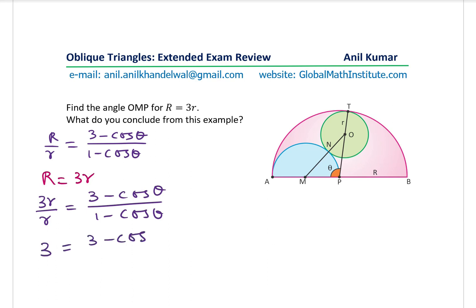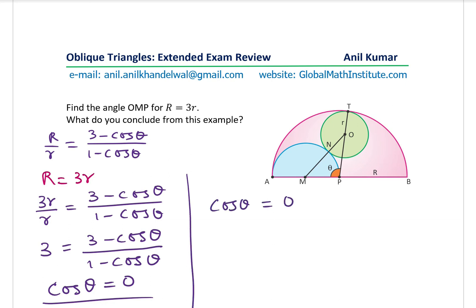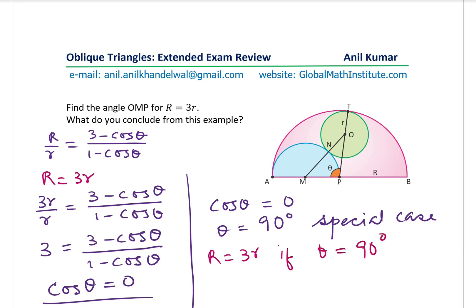This equation is satisfied when cos θ = 0, which gives θ = 90°. So this is a special case: when the big semicircle radius R equals 3 times the small circle radius r, the angle θ is a right angle. In many test questions, you will find this drawing where θ is actually 90°, making it simpler to solve, but this is the general solution.